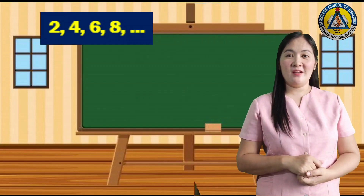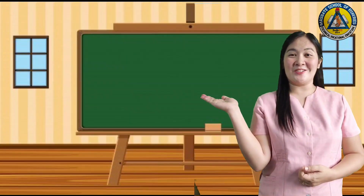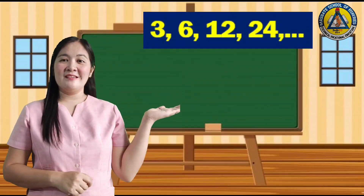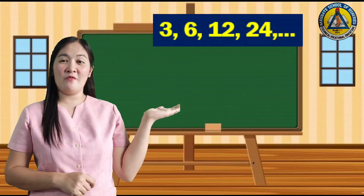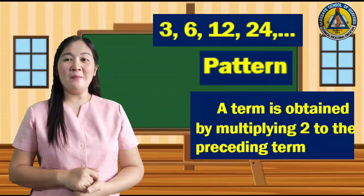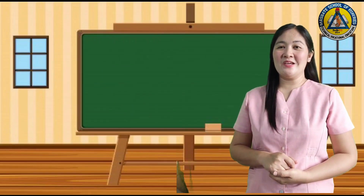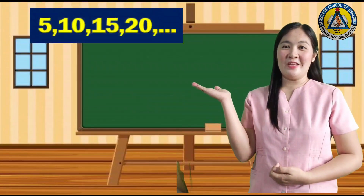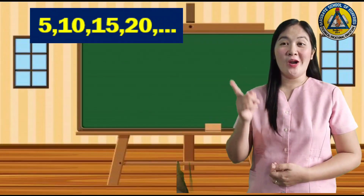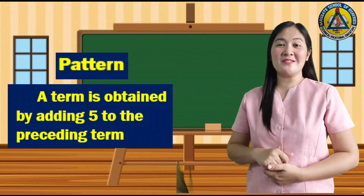The pattern: each term is obtained by adding 2 to the preceding term. What about in this sequence: 3, 6, 12, 24? Each term is obtained by multiplying 2 to the preceding term. What about the sequence 5, 10, 15, 20? Each term is obtained by adding 5 to the preceding term.